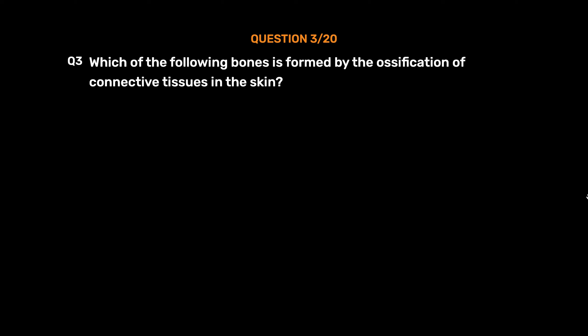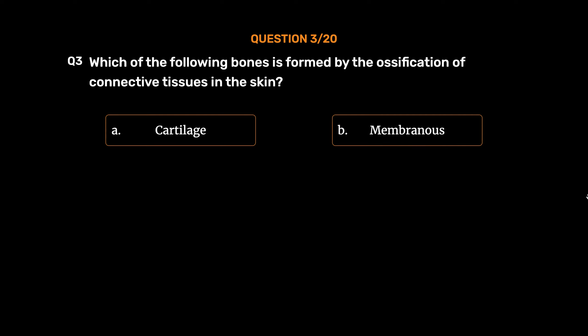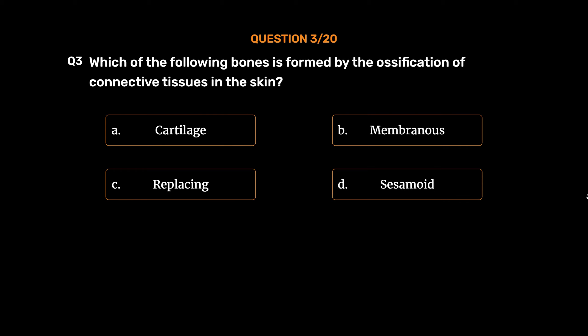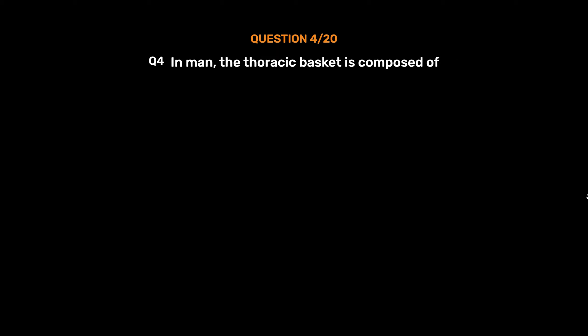Question No. 3. Which of the following bones is formed by the ossification of connective tissues in the skin? Option A. Cartilage, Option B. Membranous, Option C. Replacing, Option D. Sesamoid. The correct answer is Option B, Membranous.